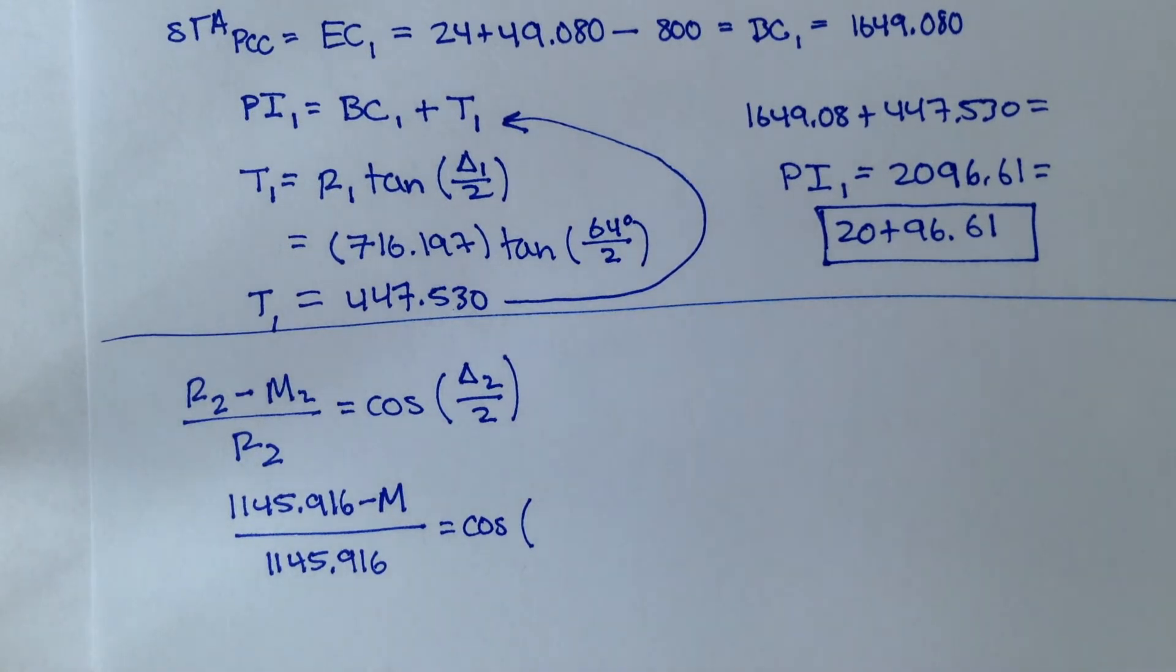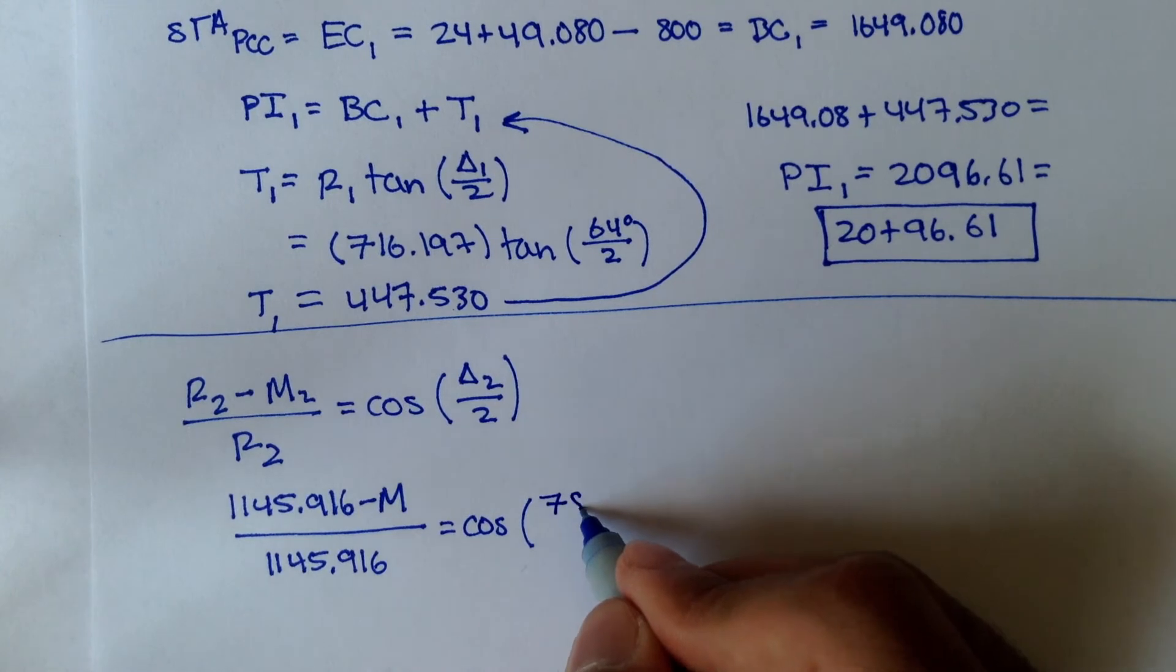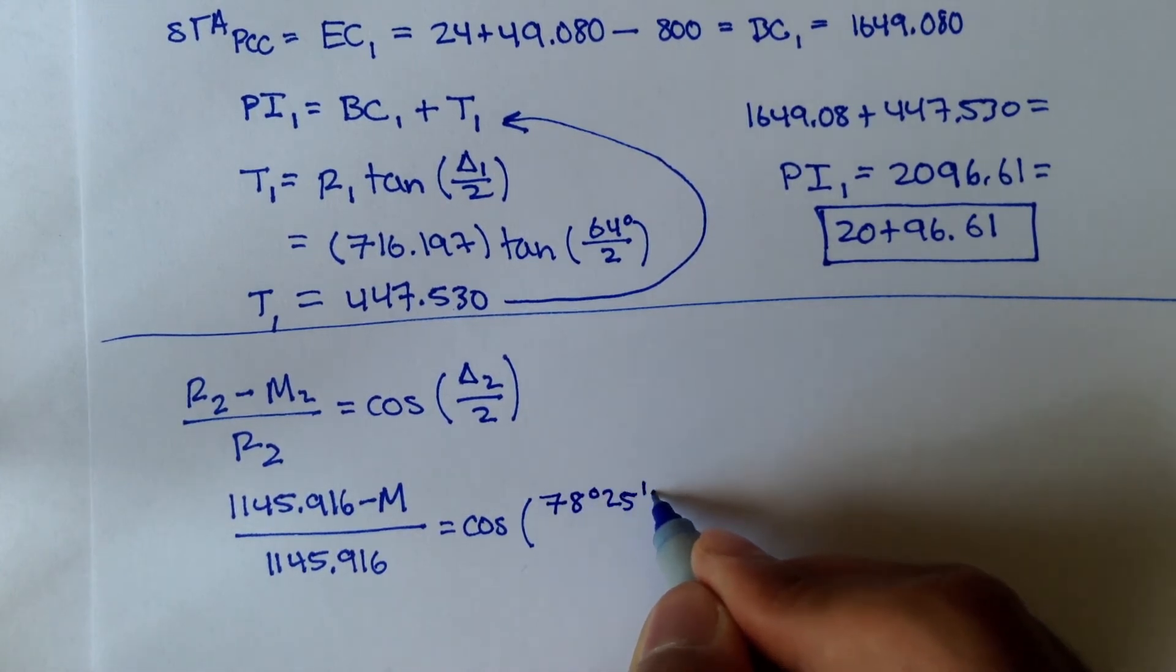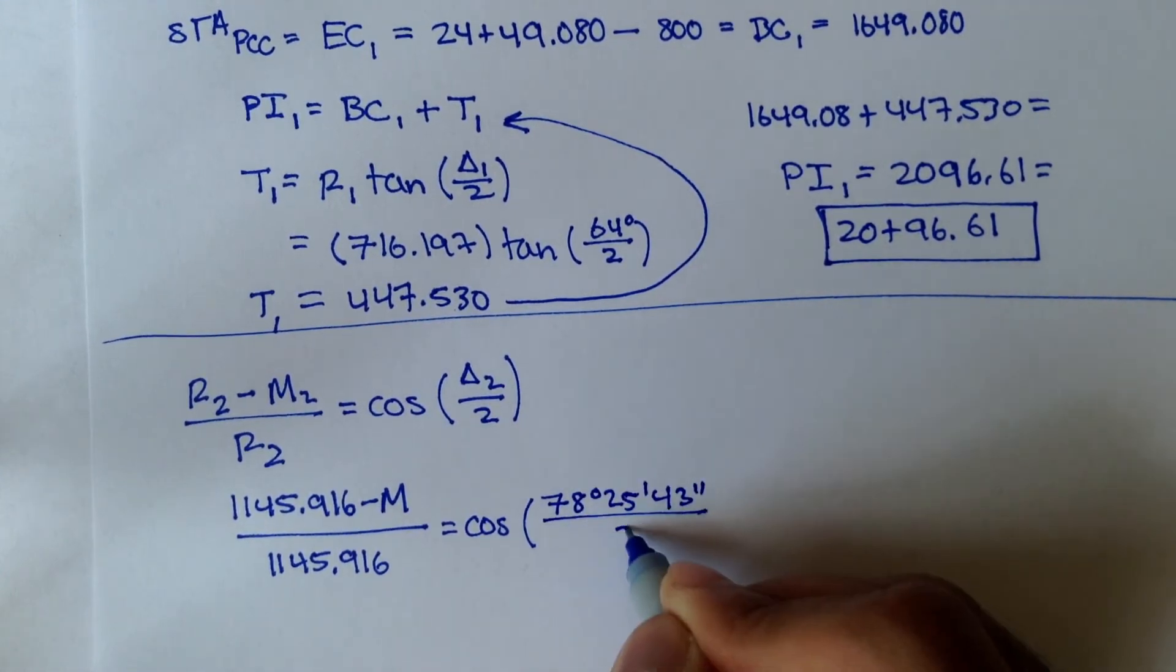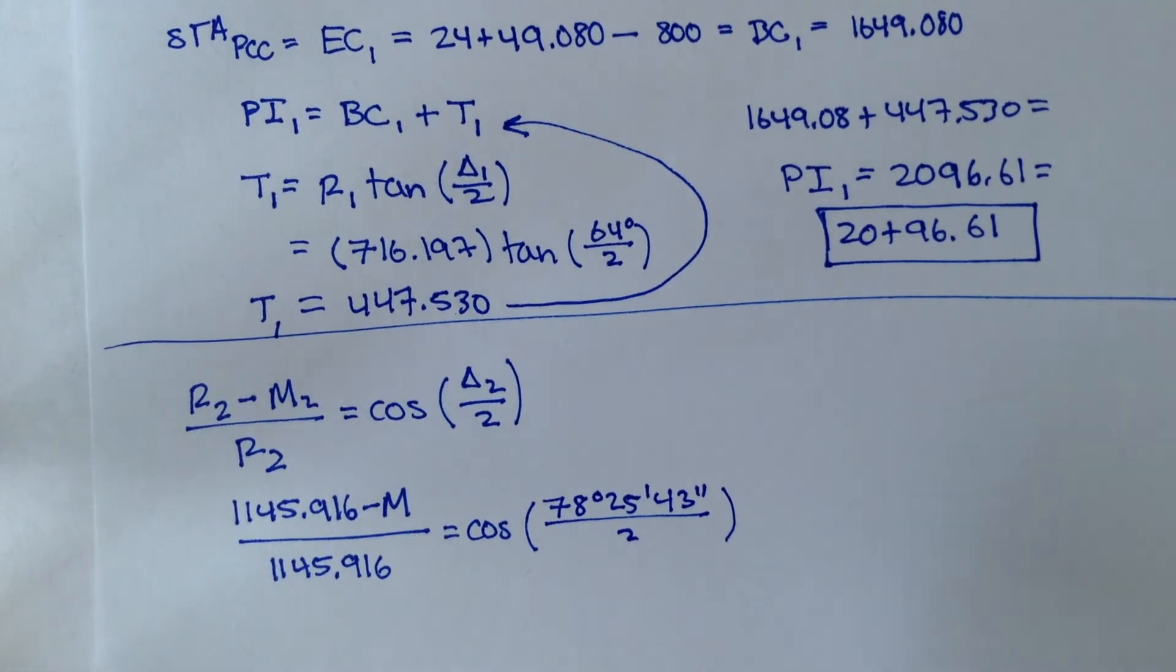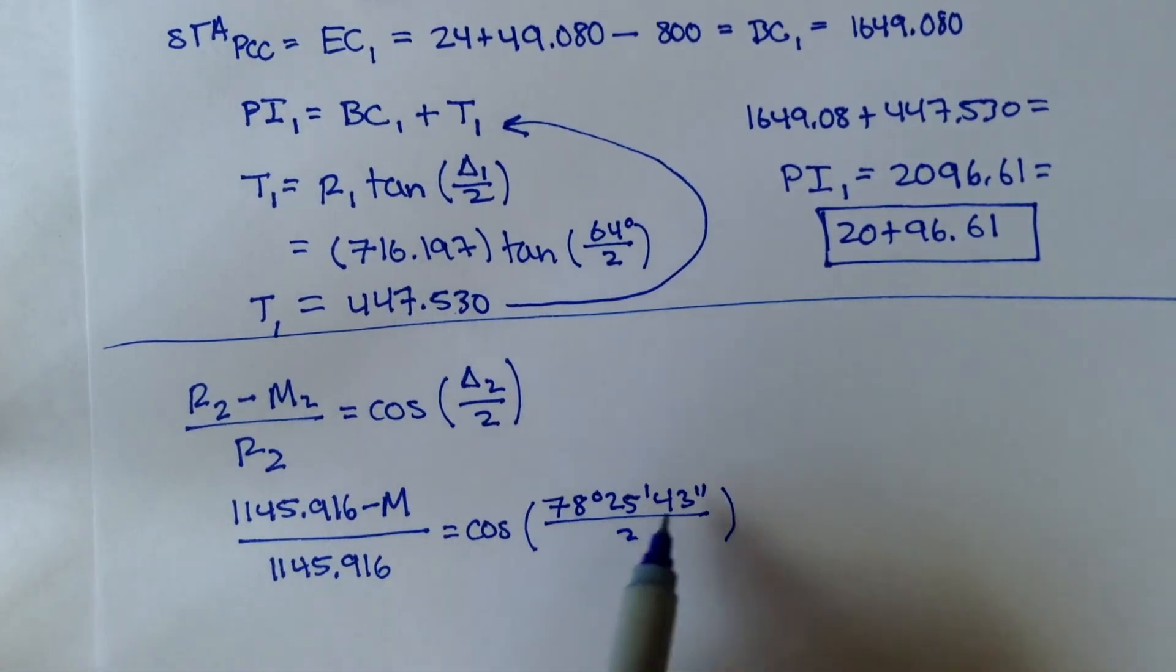minus M over 1145.916, and that's equal to cosine of the interior angle 2, which was, what was it? It was 78, 25, 43, and that we actually solved in the last video, right?